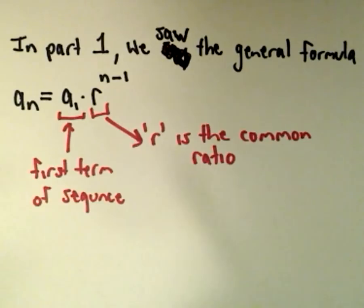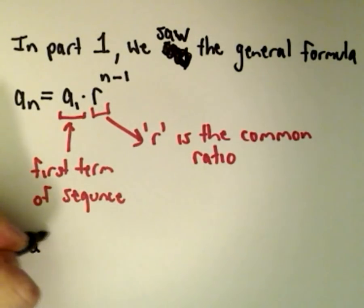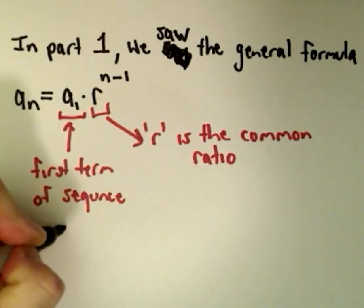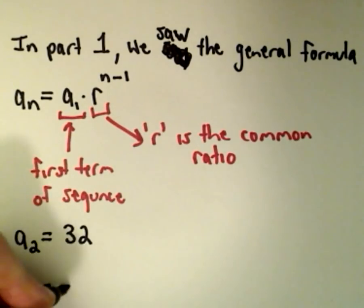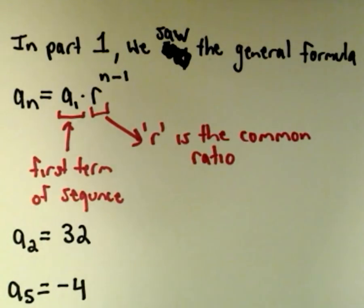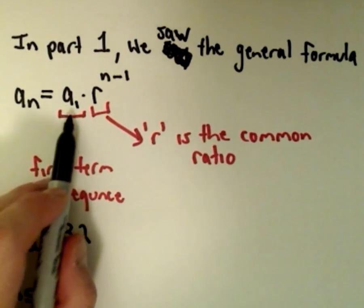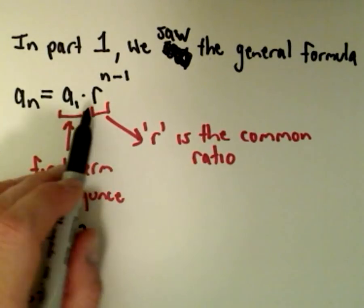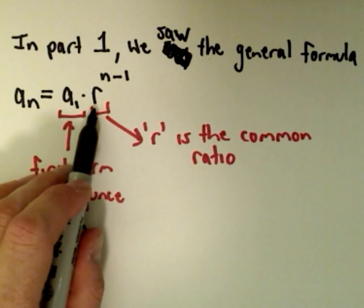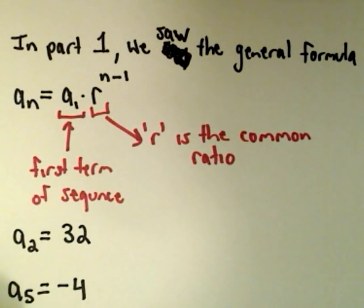We're given some information already: a sub 2 equals 32 and a sub 5 equals negative 4. To use the formula we need to figure out two things: what is a sub 1, and what is r. We don't know what a sub 1 equals, and we also don't know what r is.